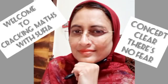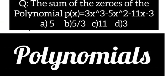Hello everyone, welcome back to my channel. Before starting, I want to say: concept clear, there is no fear. Okay, let's start. The question is: sum of the zeros of the polynomial 3x cube minus 5x square minus 11x minus 3.